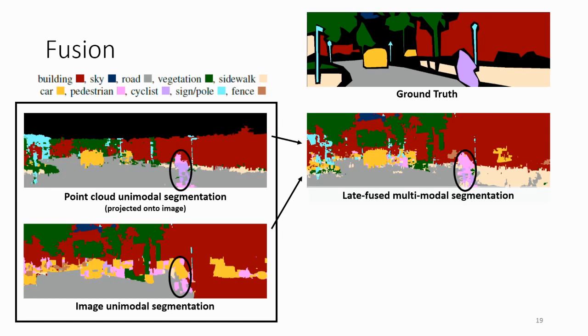And we see some interesting improvements here. If you note this encircled person, it's actually correct in the point cloud domain but incorrect in the image domain. And after fusion, our prediction is now more correct.